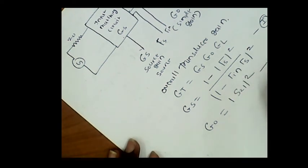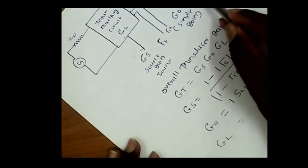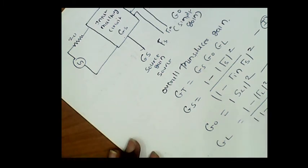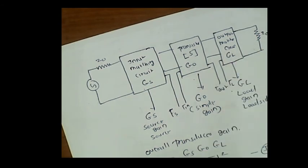The transistor gain G0 equals |S21|², which is equation 2. The load-side gain GL equals (1 minus |ΓL|²) / |1 minus S22·ΓL|², which is equation 3. The overall transducer gain for the general transistor amplifier circuit is the product of these three terms, GT = GS × G0 × GL. When the transistor is unilateral, S12 equals zero, Γin equals S11, and Γout equals S22.